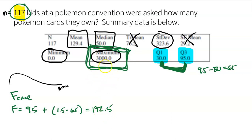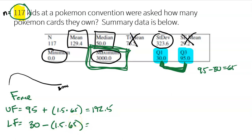Could there be more outliers? Maybe — perhaps another kid has 1,000 Pokemon cards, which would also be over our fence. I just don't know without seeing all 117 values. Then we do the lower fence: Q1 minus 1.5 times IQR = 30 minus 1.5 times 65 = negative 67.5. Does anybody have negative 67.5 Pokemon cards? You can't even have a negative number, so there are clearly no lower outliers. We have at least one confirmed outlier at 3,000.